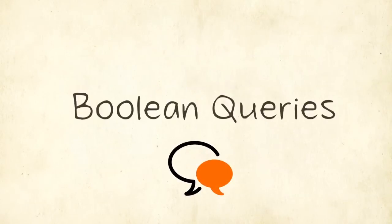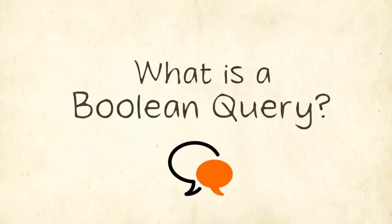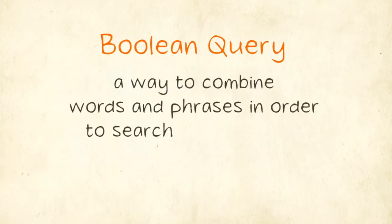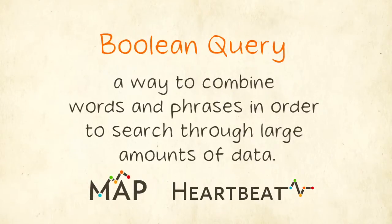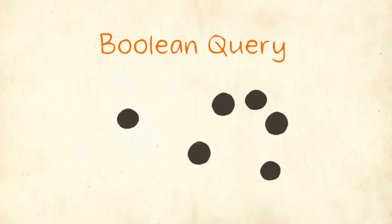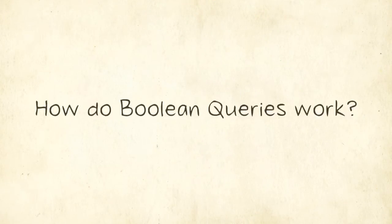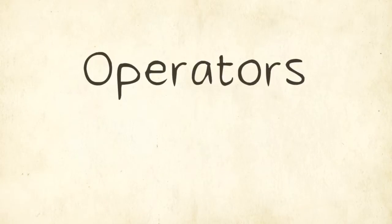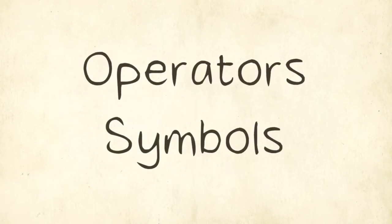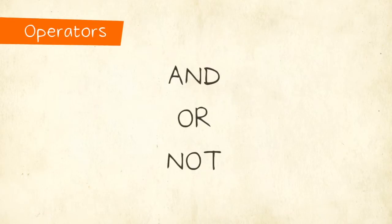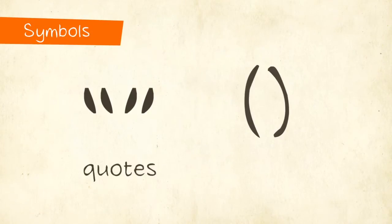The solution? Boolean queries. A Boolean query is a way to combine words and phrases in order to search through large amounts of data. Think of it as an easier way to find what you're looking for in a very crowded space. We construct Boolean queries using different combinations of operators and symbols to find more relevant results. The three operators used are AND, OR, and NOT, and two additional symbols: quotes and parentheses.